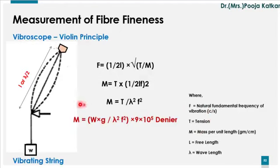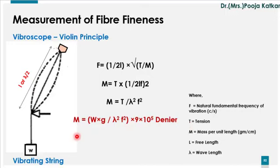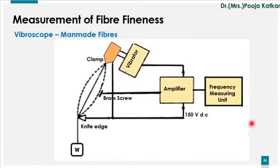Using the equation, you can input the values of tension applied on the fiber, the length of the fiber, and record the frequency value from the frequency measuring unit to calculate the denier of the fiber. Alternatively, a meter can be calibrated directly in terms of denier of the fiber. This is how the vibroscope is used to measure fineness of fiber, especially man-made fibers. Thank you.